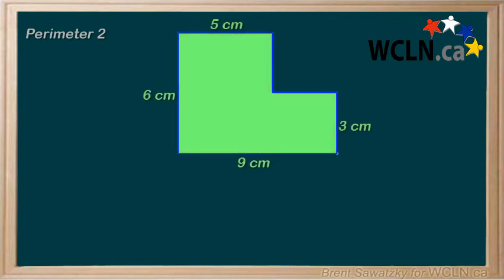At this point, you have a good feel for perimeter in simple shapes. It can sometimes be a bit more challenging to determine the perimeter of more complex shapes. Let's do this example. Determine the perimeter of the object shown.